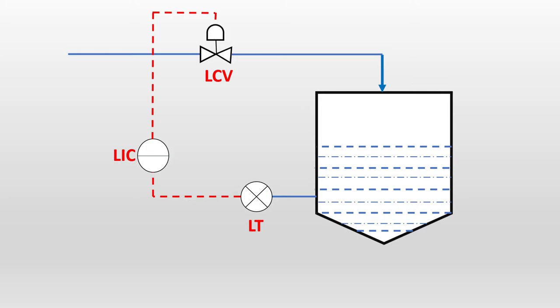The control valve operates to control the flow rate so that the level stays within the operating envelope. For example, if the level transmitter senses a low level, the Level Indication Controller signals the level control valve to open; if the level is high, it signals the valve to close so that it doesn't overflow. Basically, the level control valve throttles to control the process fluid into the tank so that the level is maintained.